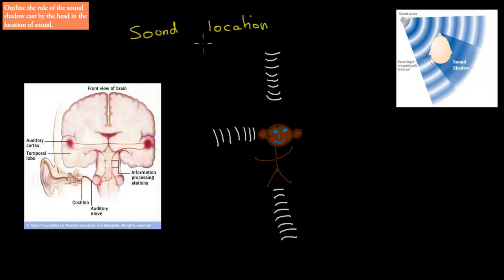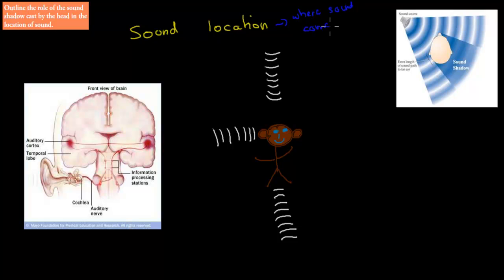In this video we're going to talk about sound location — what sound location means. It's the idea of how do we know where sound comes from: how do we know if it's coming from the left, from the right, from behind, or from in front of us?